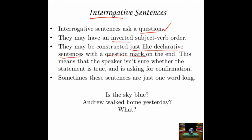Sometimes these interrogative sentences are just one word long. For example, we had 'The sky is blue' for the declarative sentence, and here we have 'Is the sky blue?' — the subject 'the sky' and the verb 'is' are in the opposite order because it's an interrogative sentence. 'Andrew walked home yesterday?' — someone might say that if they don't really believe what you just said. Maybe Andrew doesn't like to walk, or there was a blizzard. Or the ever-popular 'What?' — one word long, a perfectly good interrogative sentence. They all end with a question mark.